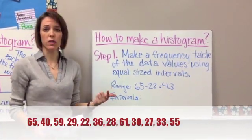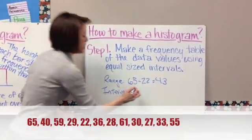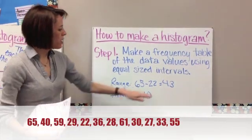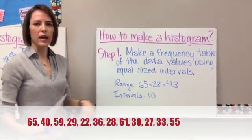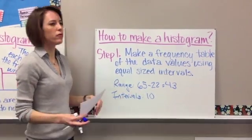A good rule of thumb is to do at least 4, because we don't want just two intervals. So what I would say is we'll do intervals of 10. Okay, so that just means we're going to start at our lowest number, and then this table will probably start at 20, and then go up 10 from there. Okay? So let's go ahead and make a frequency table.